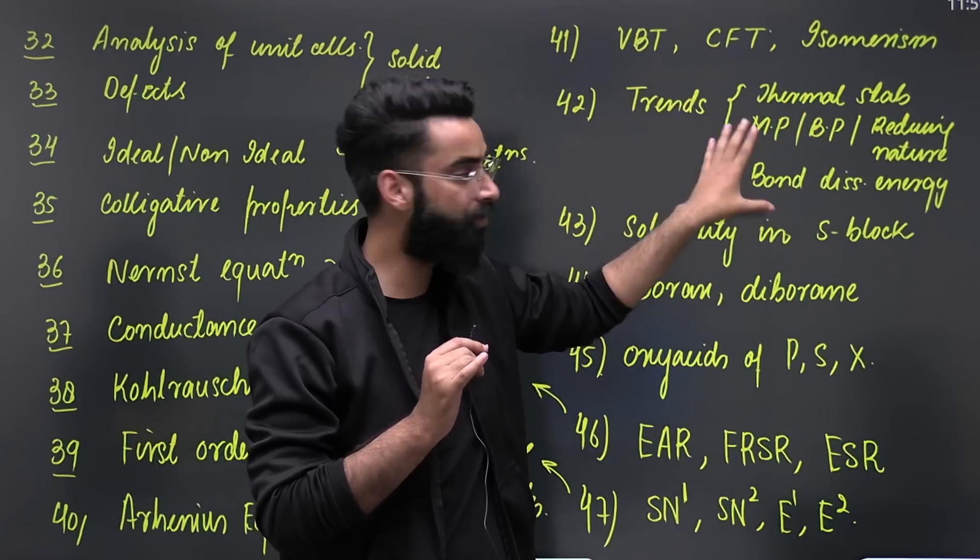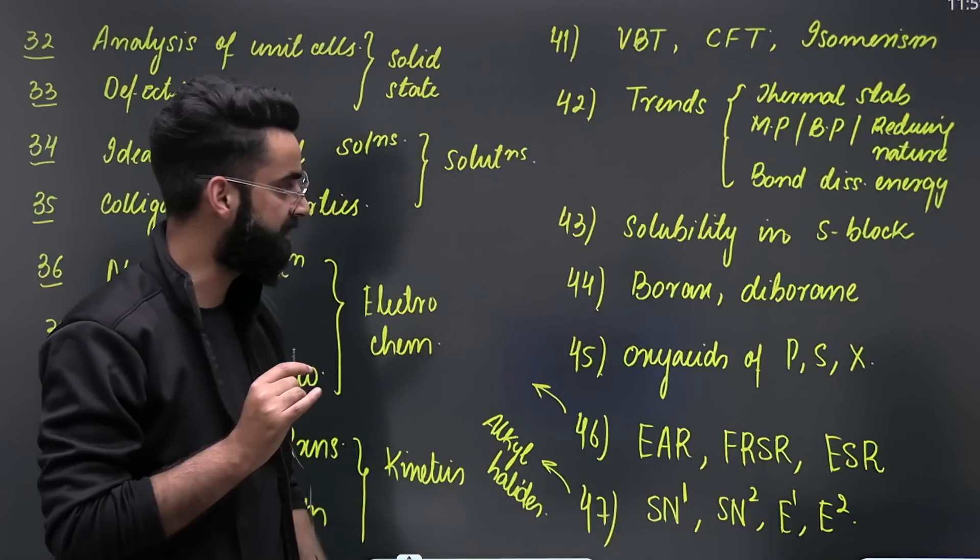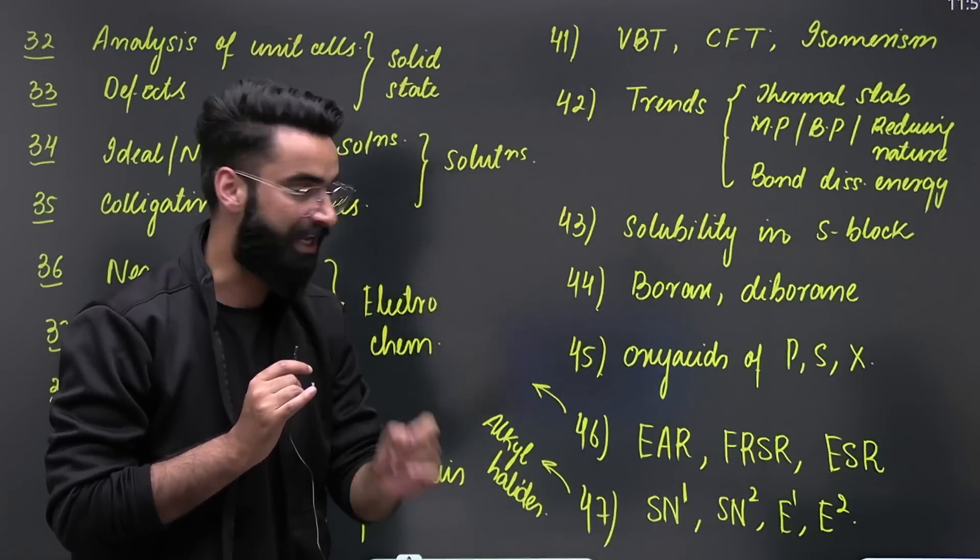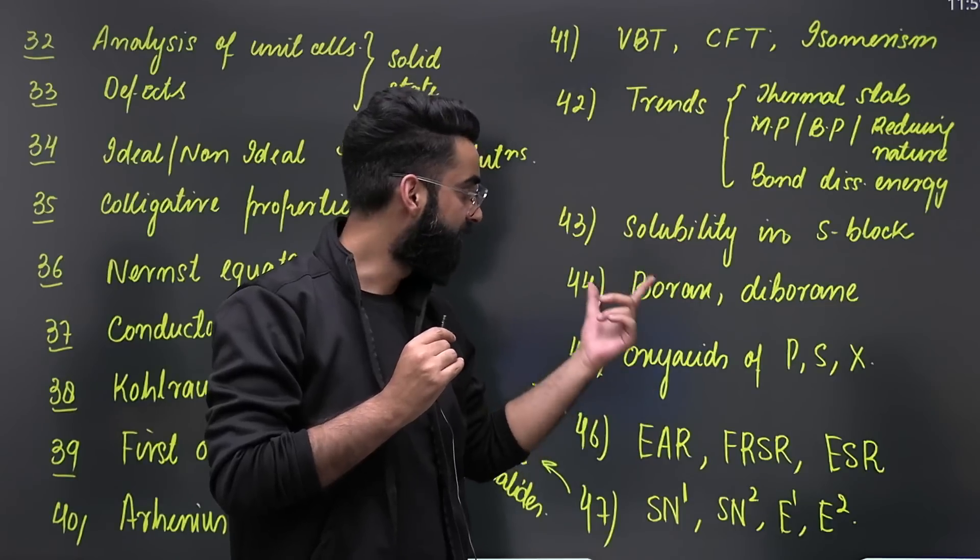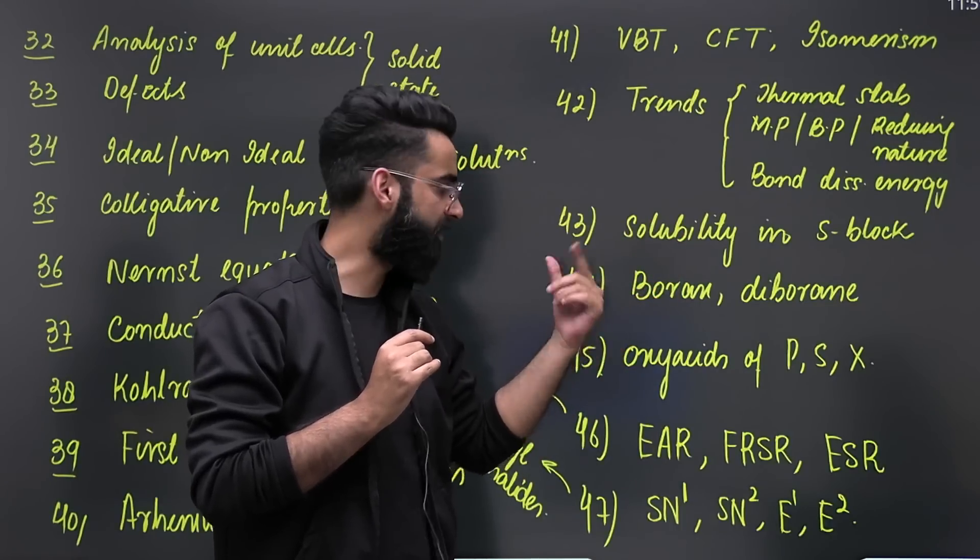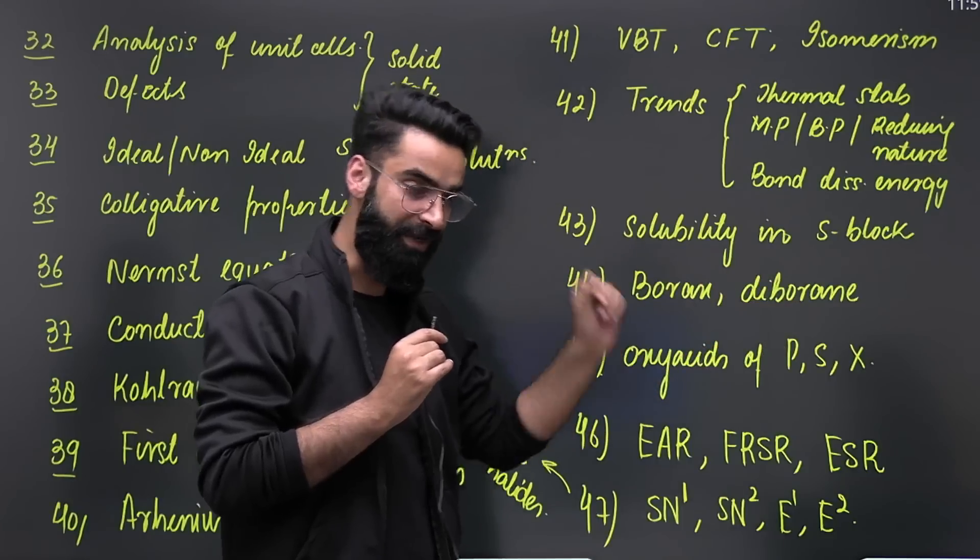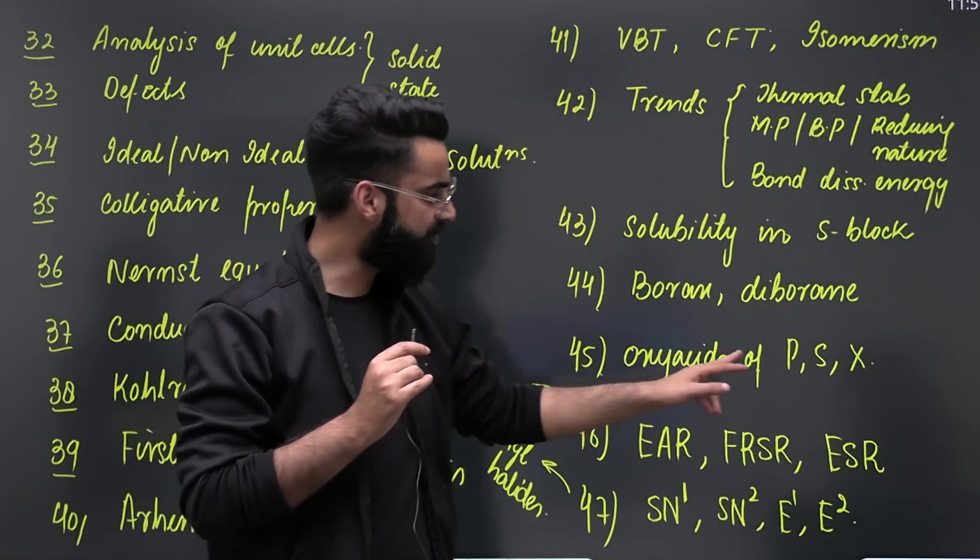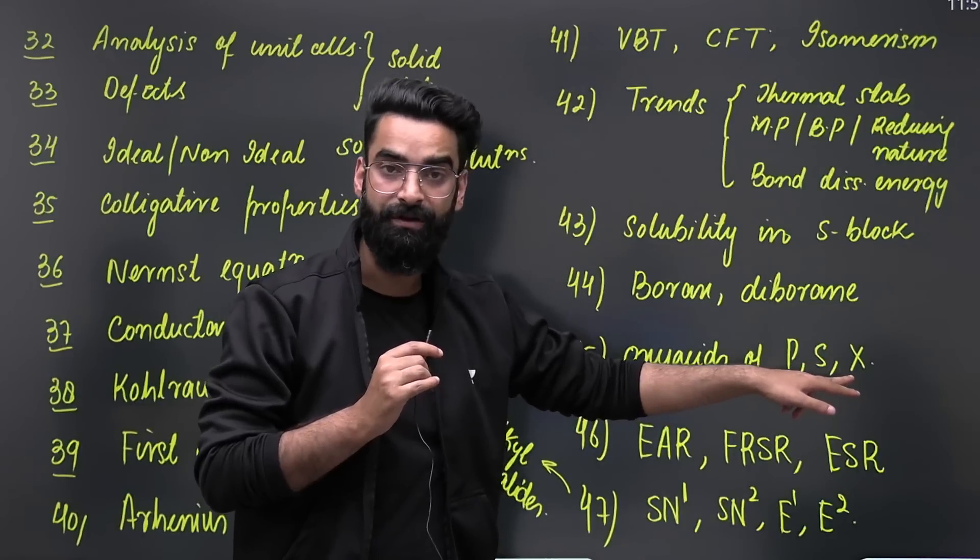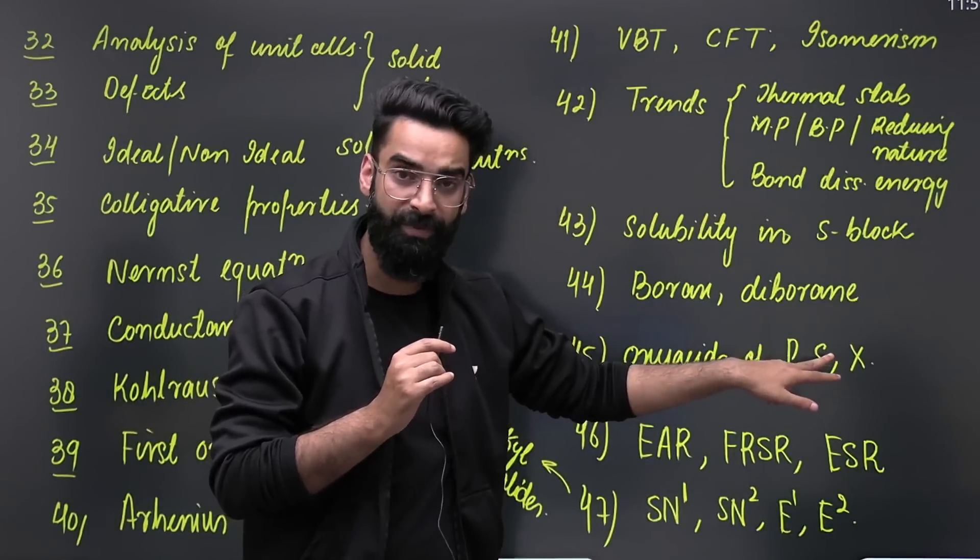In your s-block elements, go for solubility, particularly the trends based on solubility. Then you have got two important compounds: one is borax, one is diborane. Read them carefully from your NCERT as well. Then you have got oxyacids of phosphorus, sulfur, and halogens. These are again three important topics which you need to focus more.